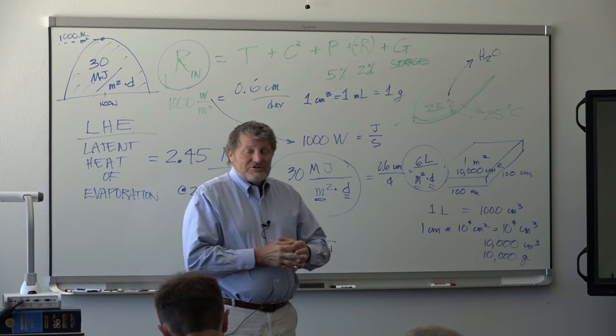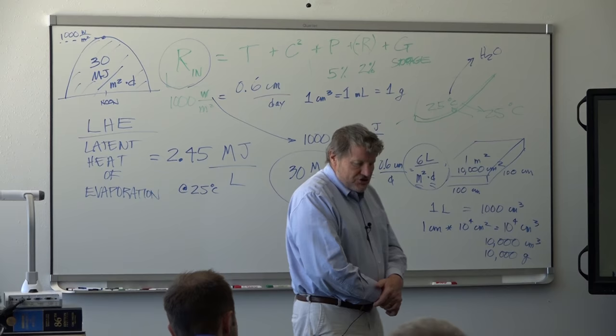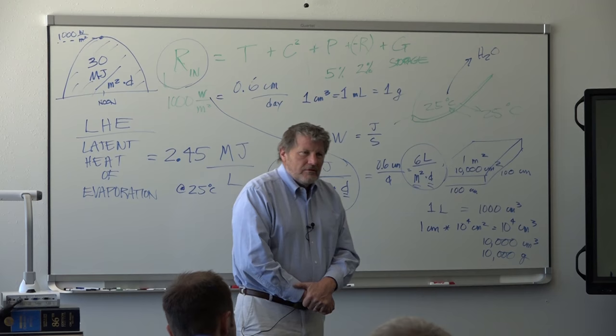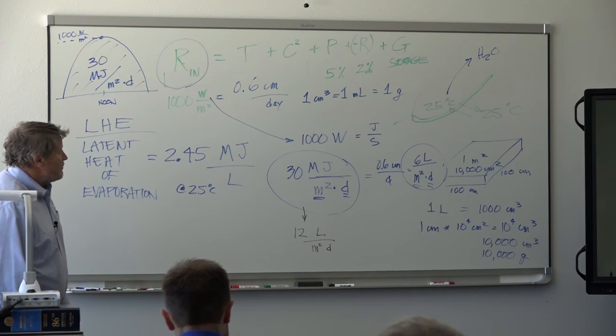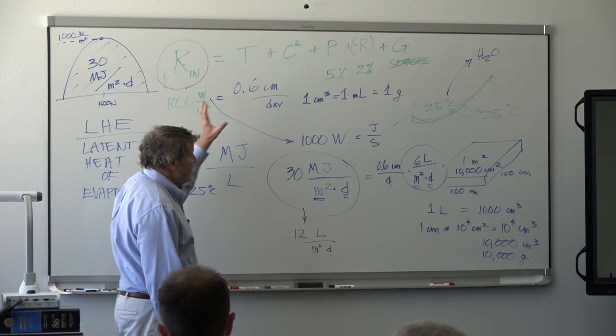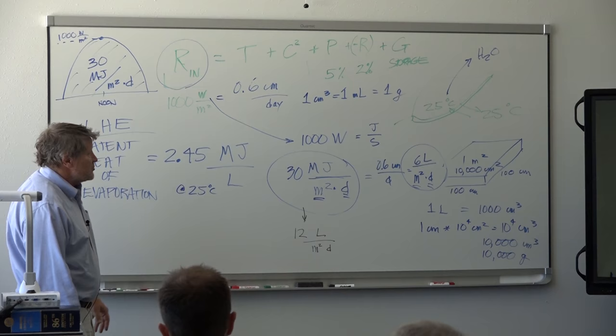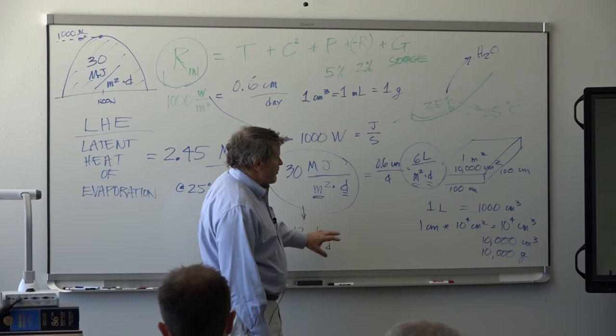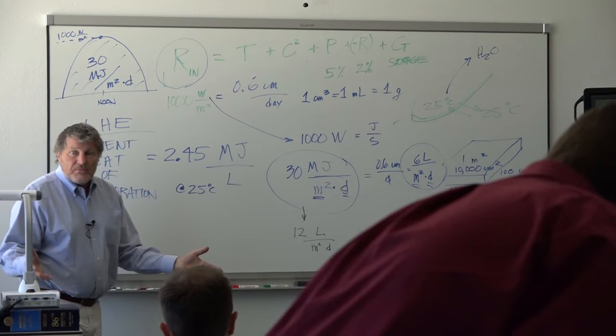This is day two of approximately an eight-series lecture on energy balance principles. I want to review where we got yesterday. The key take-home message is we're measuring radiation, and through the latent heat of evaporation, we can calculate how much water would have to evaporate to balance this. We convert to a volume of water, multiplied by area, to get depth of water, which is typically the irrigation we tell people to put on.